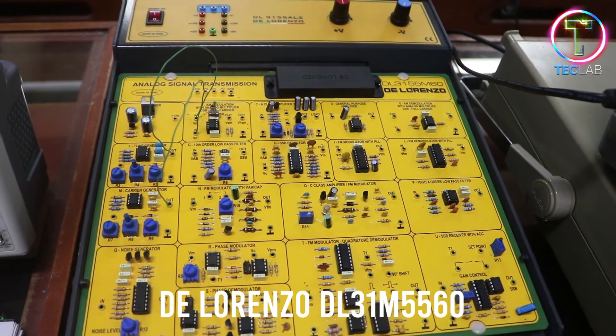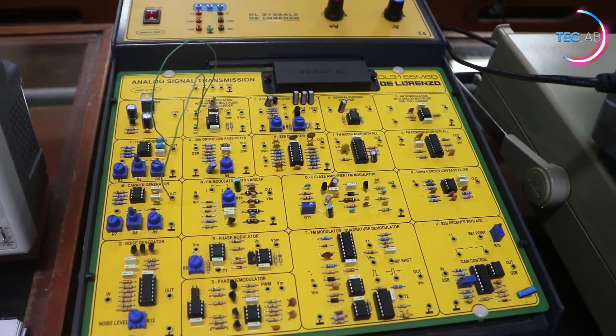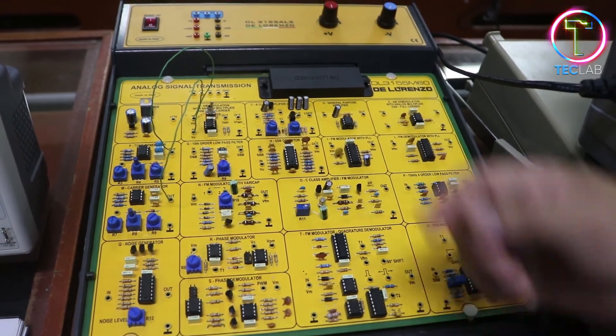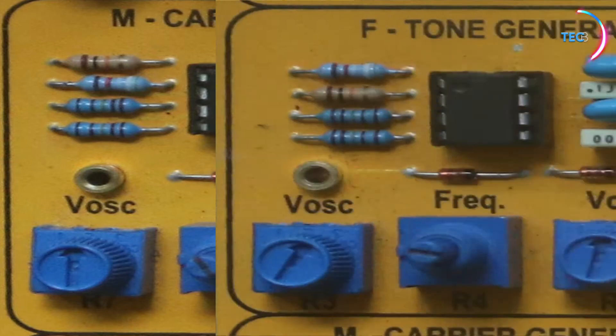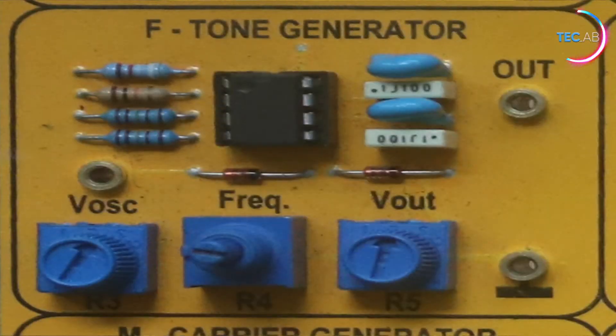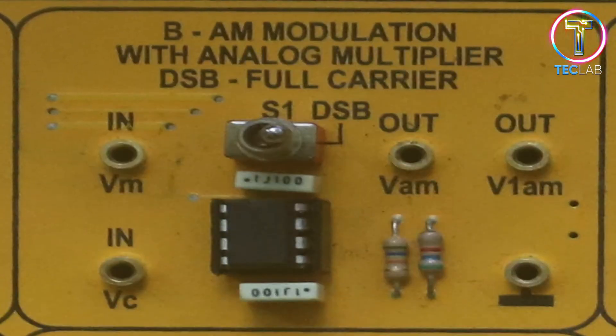As you can see here, we're going to use our three modules in DeLorenzo analog signal transmission system. We have the module M, which is the carrier generator. We have the module F for our tone generator. And our module B for our AM modulator.